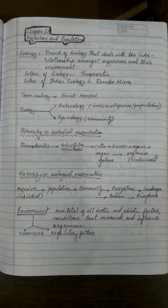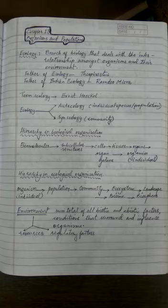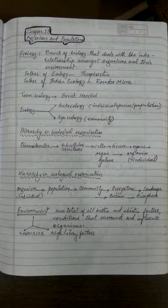We learned that the biosphere has three main portions: the area of the atmosphere where life is possible, the area of the lithosphere where life is possible, and the area of the hydrosphere where life is possible.